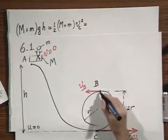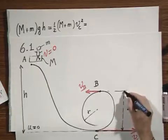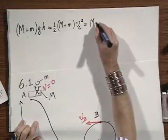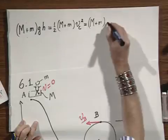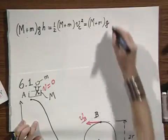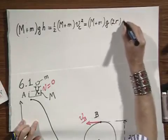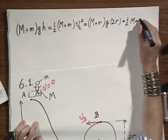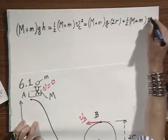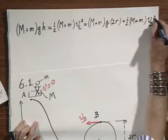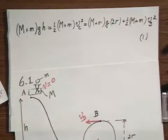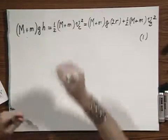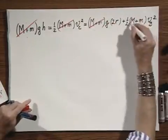Now we arrive at point B, so we have again picked up gravitational potential energy over this height, so we have (M + m) times G times 2R, plus the kinetic energy at point B: one-half (M + m) times VB squared. This is a very important equation — this is the conservation of mechanical energy — and notice that all the (M + m)'s cancel.